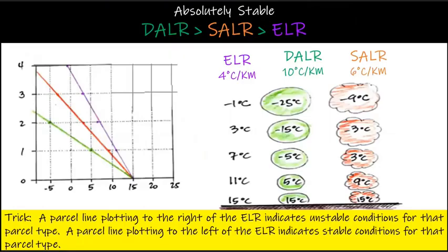In the case of absolute stability, both the dry and saturated parcel plots are on the same side of the environment lapse rate — specifically, both are on the left or cool side. This means air of any relative humidity will cool faster than the surrounding environment and will not rise. Air would tend to sink and create clear skies. The condition is: dry adiabatic lapse rate > saturated adiabatic lapse rate > environment lapse rate.